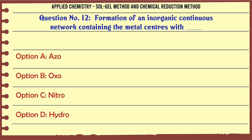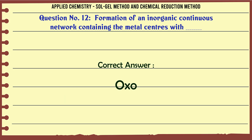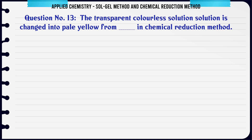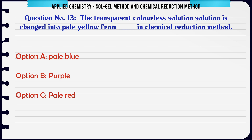Formation of an inorganic continuous network containing the metal centers with which bridge? A. Azo, B. Oxo, C. Nitro, D. Hydro. The correct answer is Oxo.